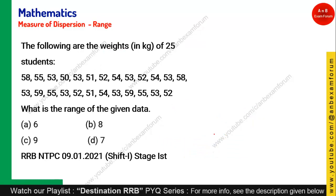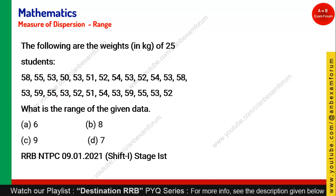Coming to the first question — the question has a very big data set, 20 points are there. But the formula, as you know, is very simple: max minus min. So you need to find out the maximum out of these data points. Let's find the maximum and minimum. First we will find the maximum. Out of this, 58 is the maximum so far. But 59 is there — so 59 is the maximum.